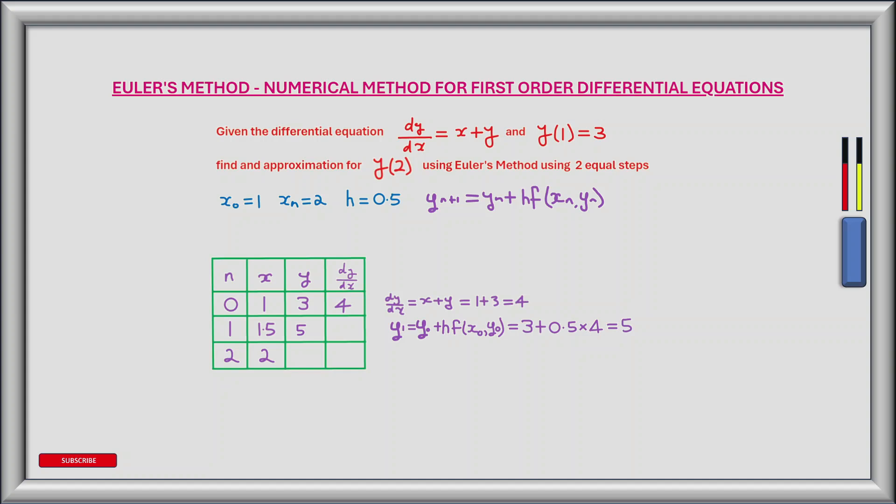multiplied by the derivative at (x₀, y₀). Now we worked that out to be 4. So we have 3 plus 0.5 times 4, which equals 5. And at this step we need to find the derivative.